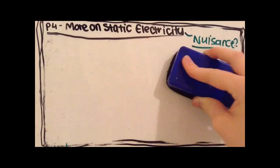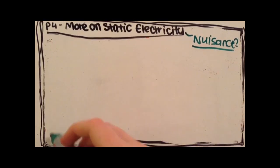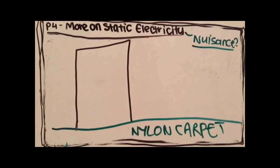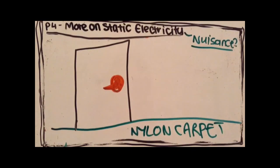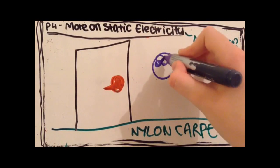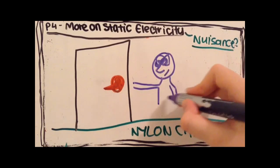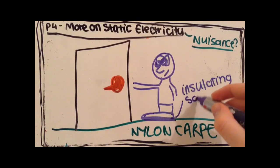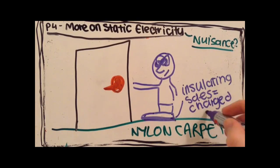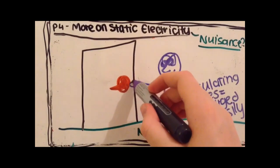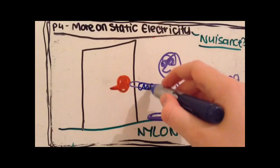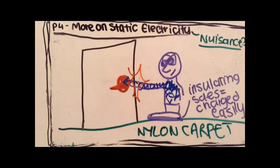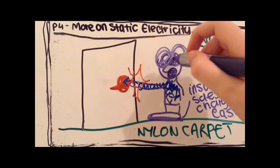Another nuisance about static electricity is shocks from door handles. If you walk on a nylon carpet wearing shoes with insulating soles, charges build up on your body. If you then touch a metal door handle or water pipe, the charge flows via the conductor, which is the metal door handle or water pipe, and you get a little shock. And this can be a nuisance.